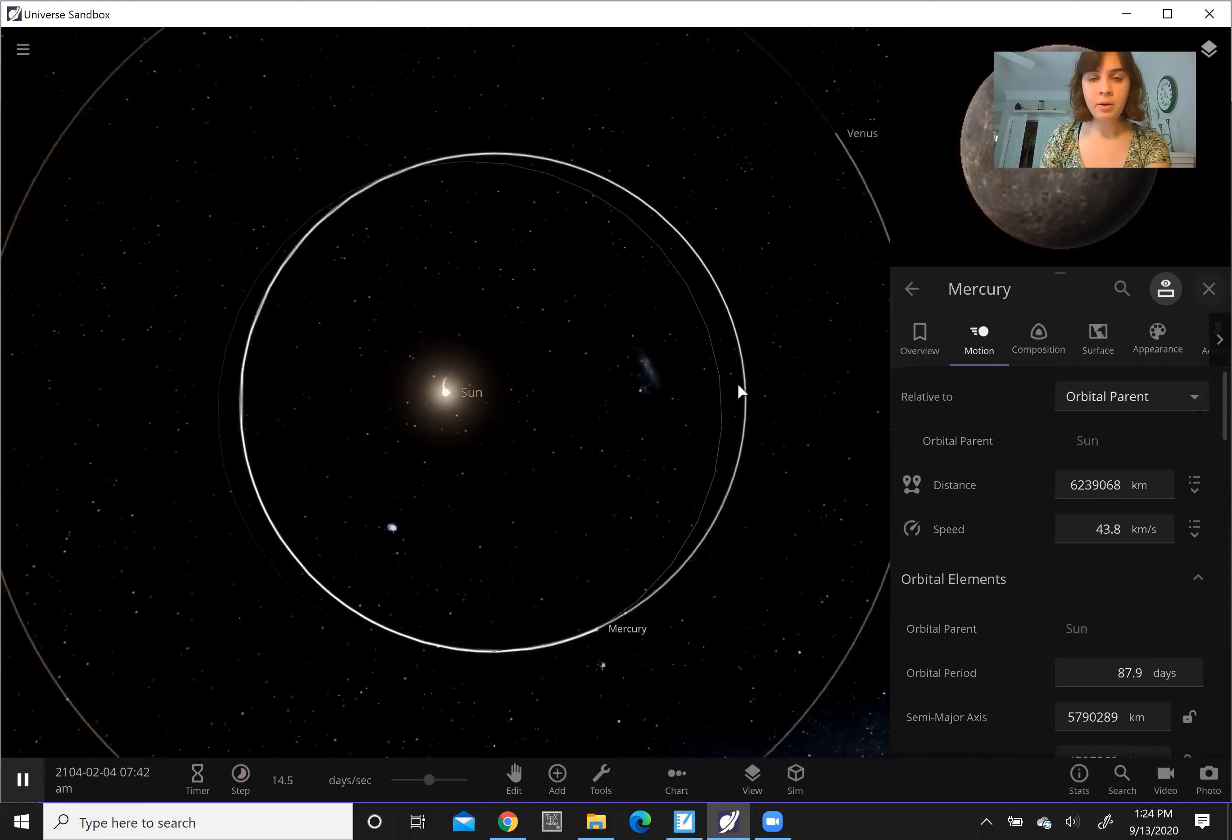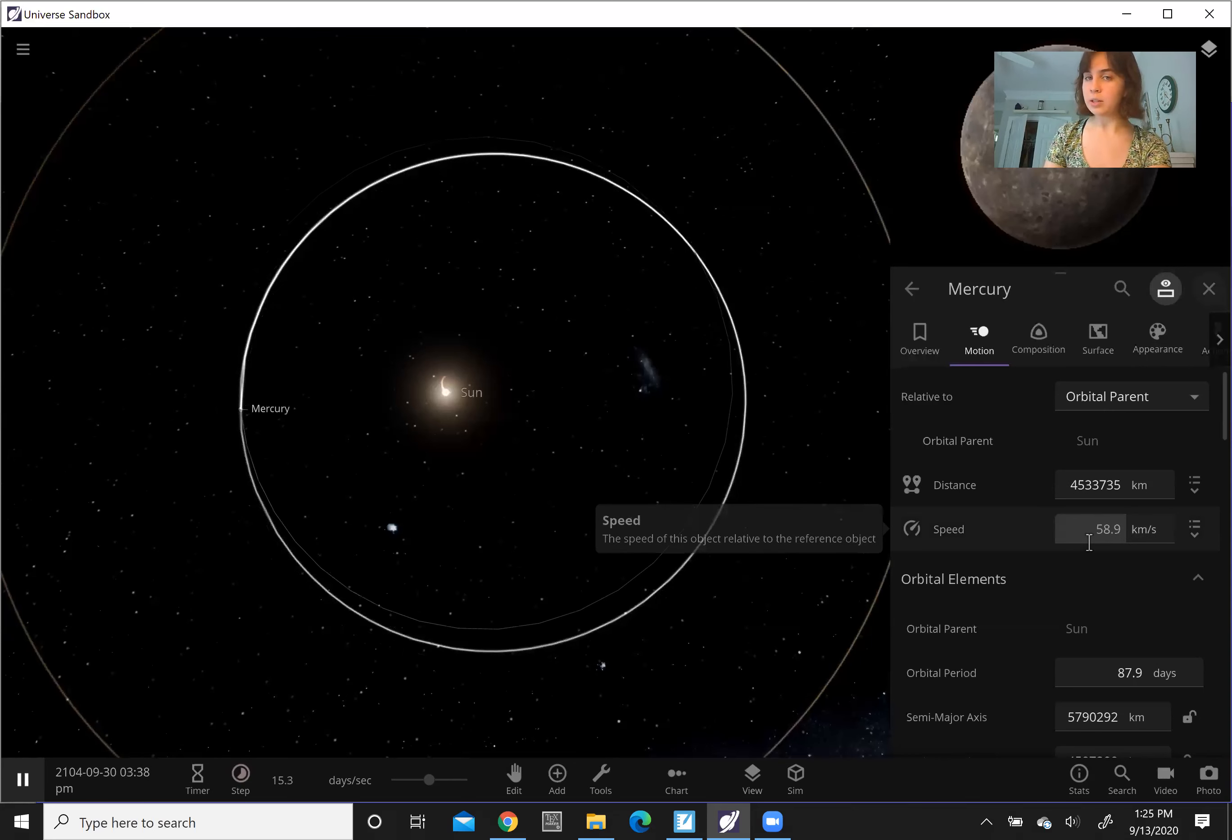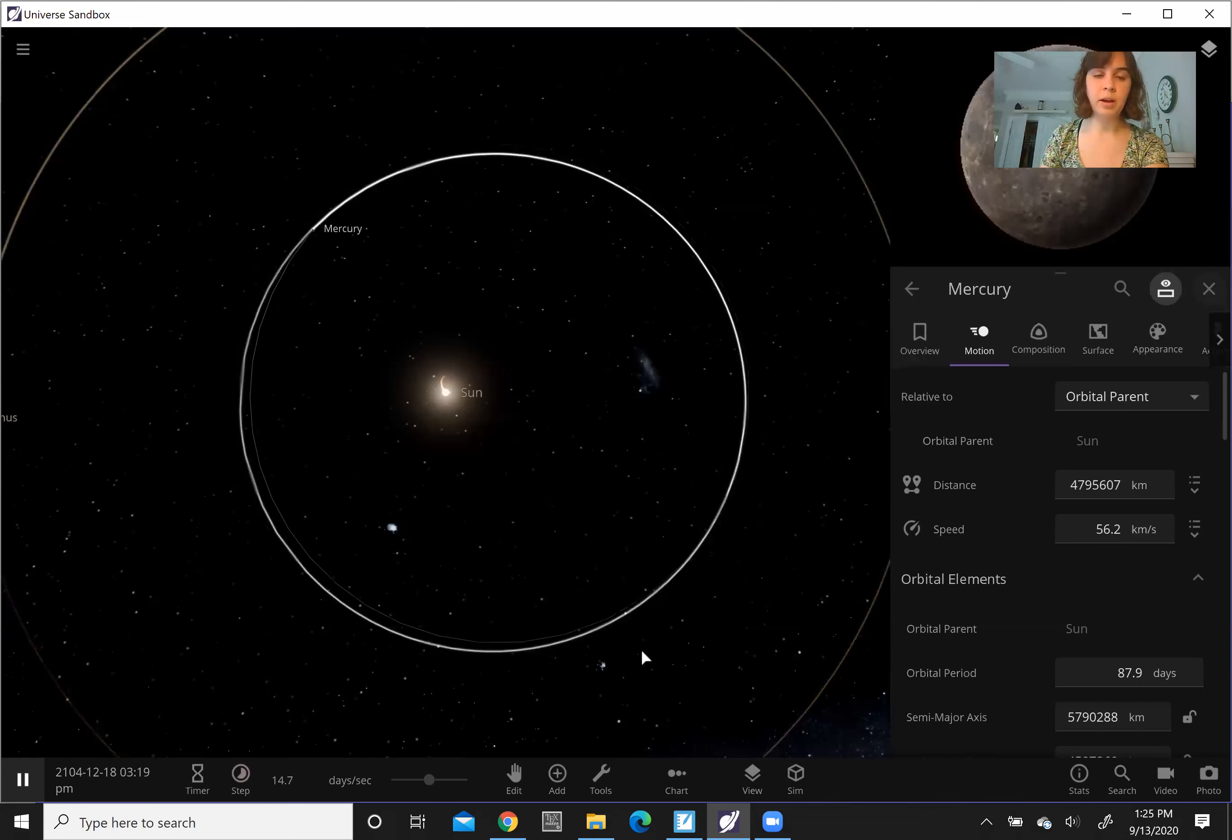Notice how when Mercury gets close to the sun, it's going about 60 kilometers per second. And then when it's far away from the sun, we're looking at more 40 kilometers per second. So you can see that the speed is definitely changing. And more than that, the speed is faster when it is closer to the sun. This kind of helps explain why Kepler's second law is able to work. It's just that the planet actually changes speeds as it goes around the sun. So the earth is not constantly moving at one speed. In order to cover those equal areas, it needs to speed up at some parts.